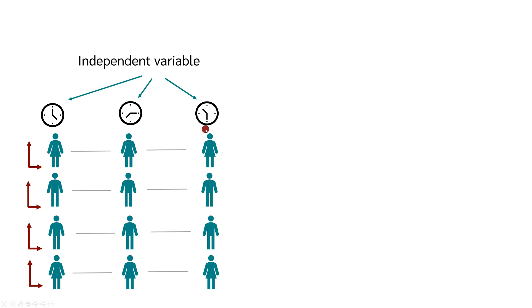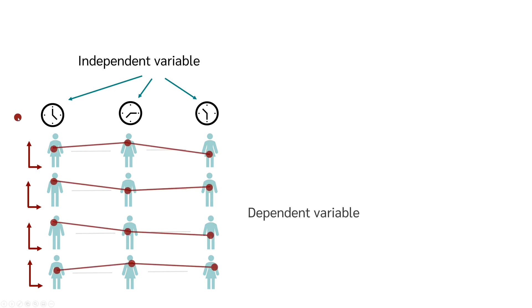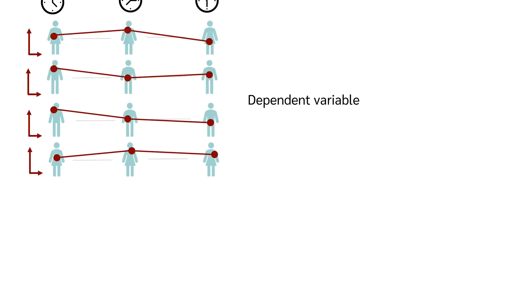So in this case, your independent variable is time or therapy progressing over time. Your dependent variable is the pain perception. You now have a history of the pain perception of each person over time, and now you want to know whether the therapy has an influence on the pain perception or not.